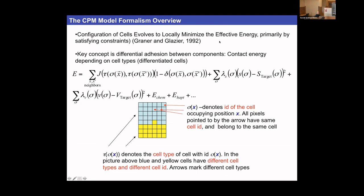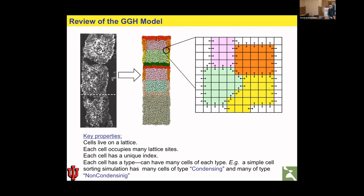One key energy term is differential adhesion — the number of interfaces between different cells. The Potts algorithm takes a given lattice configuration, makes a tiny perturbation — extending a pixel or moving a pixel just one step — and computes the energy before and after to get the change in energy associated with the proposed perturbation.